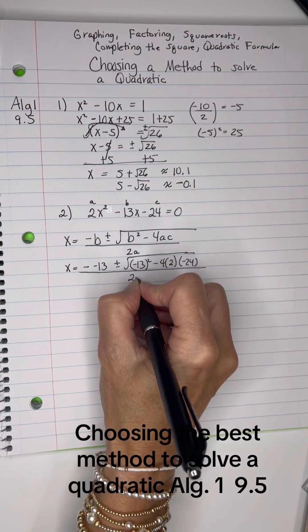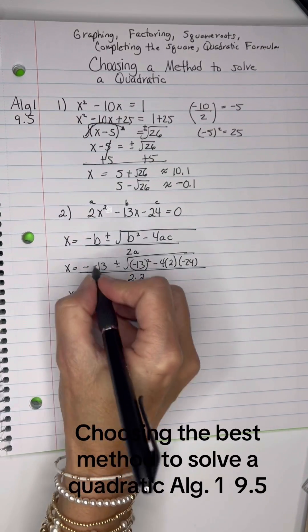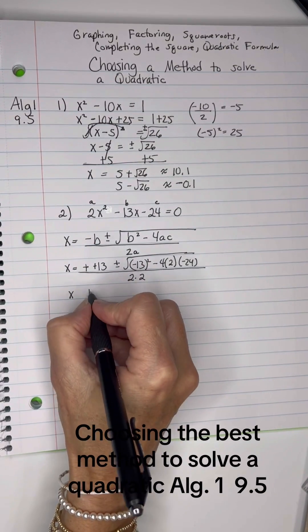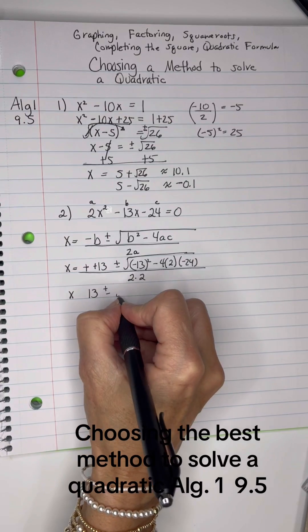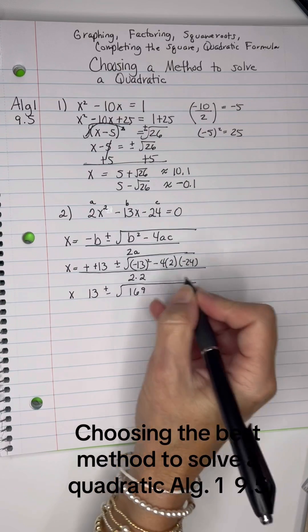All over 2 times a, which is 2. Okay, so a negative negative 13 would be 13 plus or minus the square root. Negative 13 squared is 169 positive.